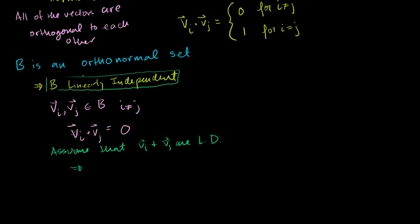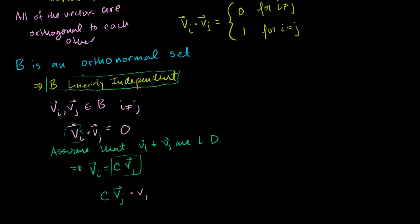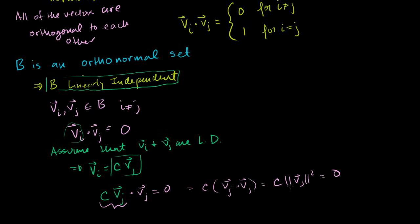If vi and vj are linearly dependent, that means one can be represented as a scalar multiple of the other. Let's say vi equals some scalar c times vj. If this is true, substituting back in: c times vj, dotted with vj, has to equal 0, since vi and vj are orthogonal. But c times vj dot vj equals c times the length of vj squared, and that has to equal 0.